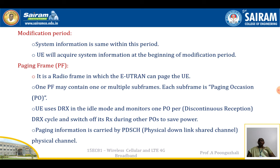A paging frame is a radio frame in which the E-UTRAN can page the user equipment. One paging frame consists of one or more sub-frames, and each sub-frame is a paging occasion. The user equipment uses discontinuous reception in idle mode and monitors one paging occasion per discontinuous reception cycle, switching off its receiver during other paging occasions to save power. Paging information is carried by the physical downlink shared channel.